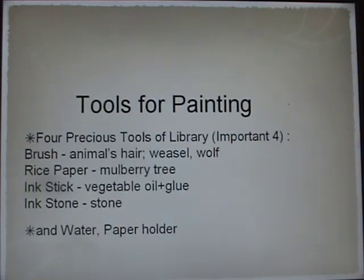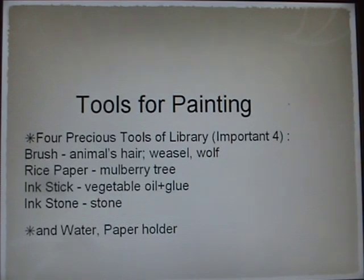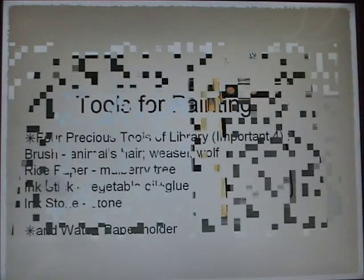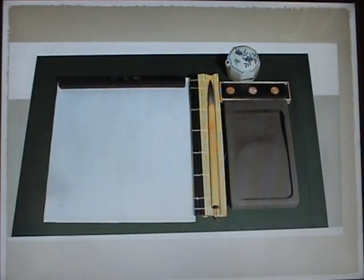These are called the four precious things of the library. The brush is made from animal hair like weasel and wolf. Rice paper is made from mulberry tree. Ink stick is made from vegetable oil mixed with glue. Ink stone is made of stone. We also need water and a paper holder. This is a picture of the tools.